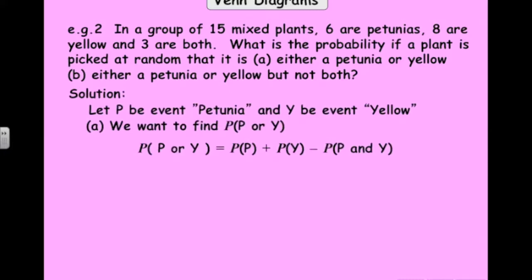So we could use the formula first, and then I'll do it using a Venn diagram. So defining these events is really helpful. P is the event that we get a petunia. Y is the event that it's yellow. So for part A, we want probability of P or Y. So that would be the union. So that formula that we just derived is written out here. So the probability that it's a petunia is 6 out of 15. The probability that it's yellow is 8 out of 15. The probability that it's both, 3 out of 15. So the answer to the first one is 11 out of 15.